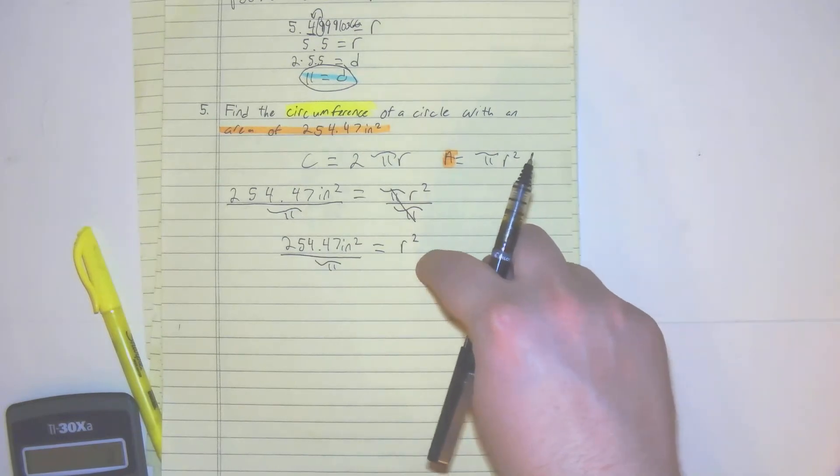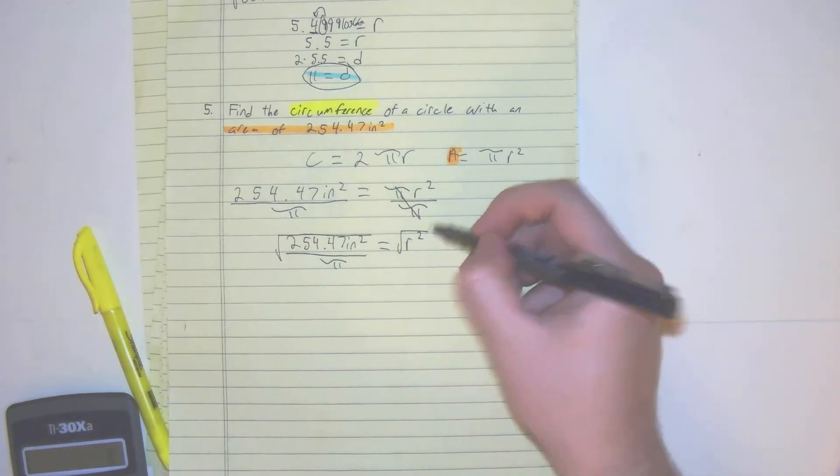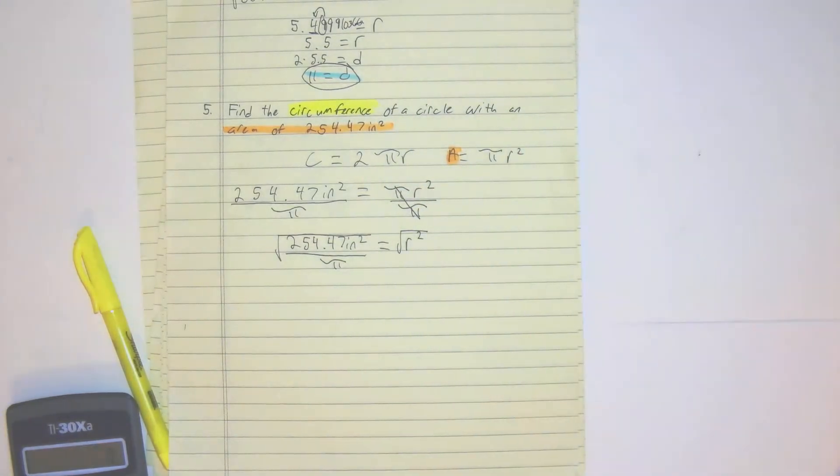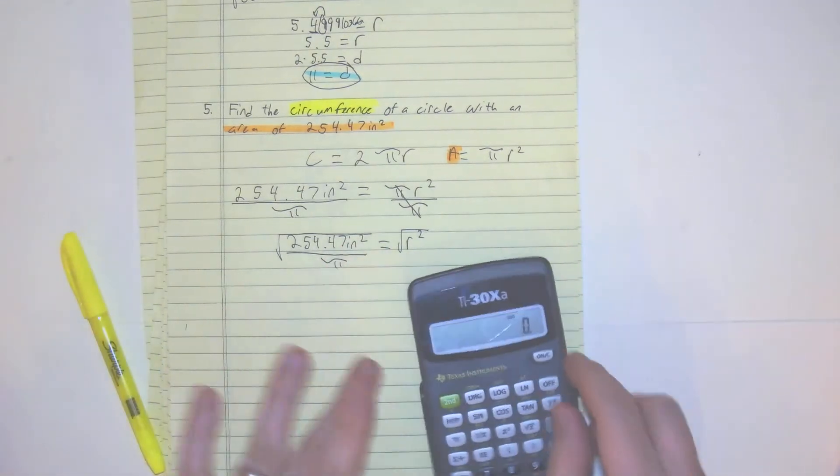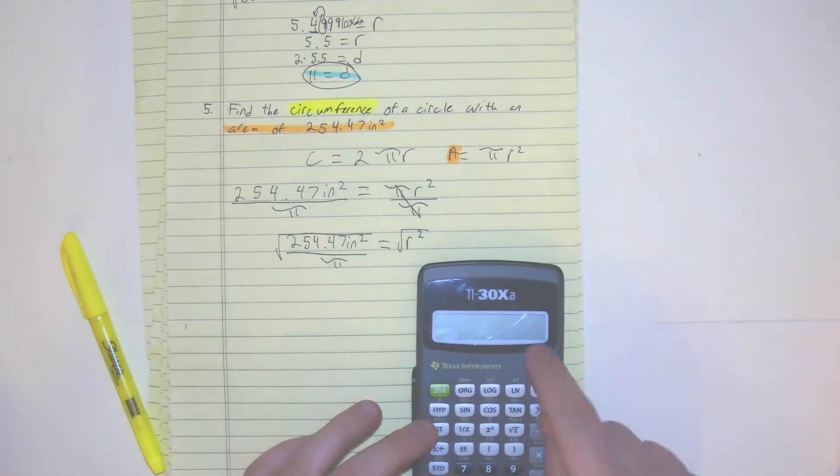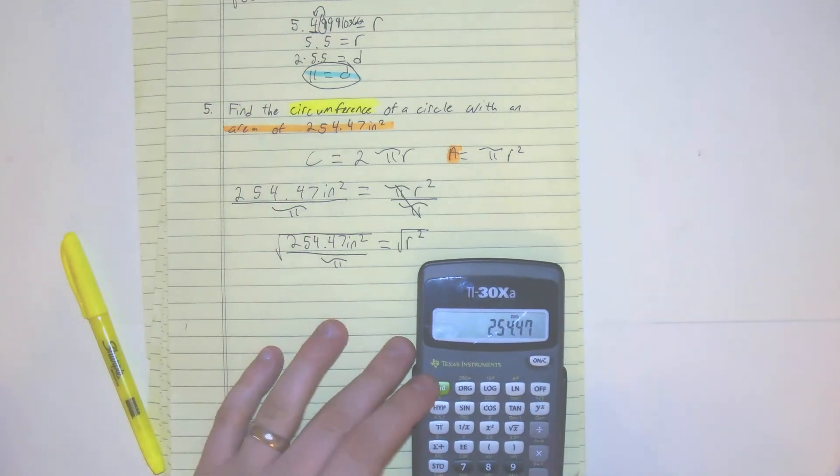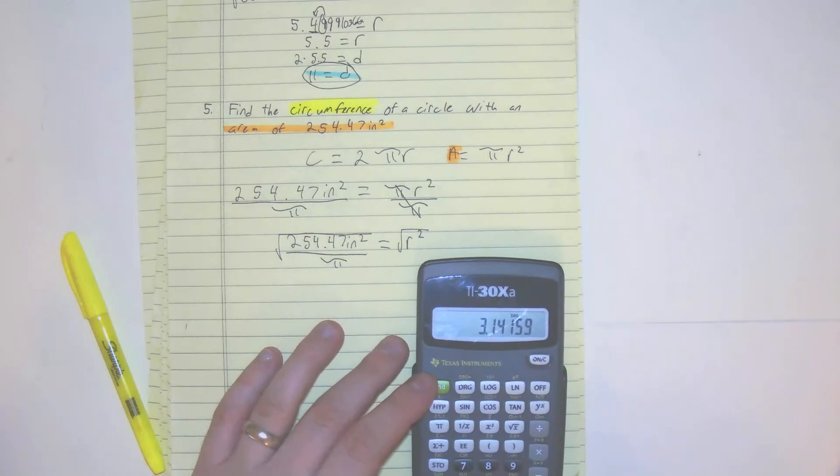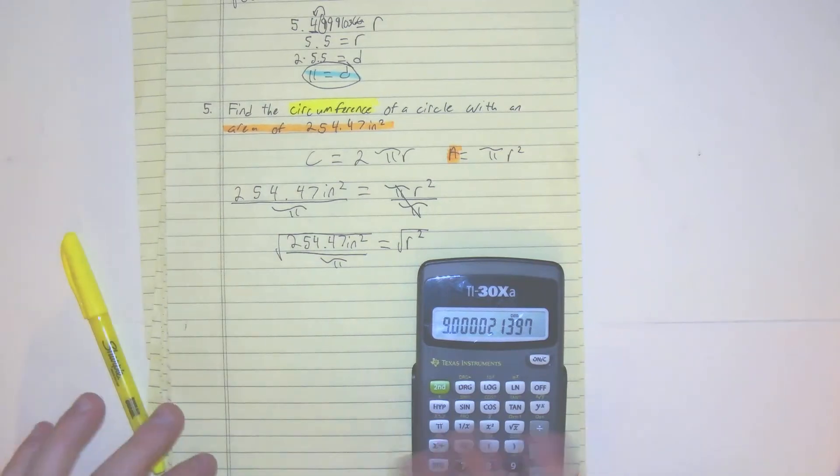And then from here, the inverse of a square is a square root. So we have a square root. And so on our calculator, what we're going to do is do 254.47 divided by 3.14159. Then we're going to square root it. And we get about 9.0. So we're just going to round it to 9 just for simplicity.